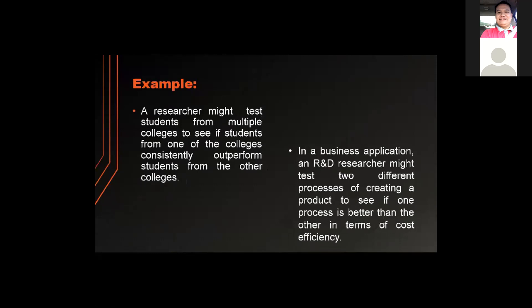Here are some examples of using an ANOVA test. First, a researcher might test students from multiple colleges to see if students from one college consistently outperform students from others. In a business application, an R&D researcher might test two different processes of creating a product to see if one process is better than the other in terms of cost efficiency.